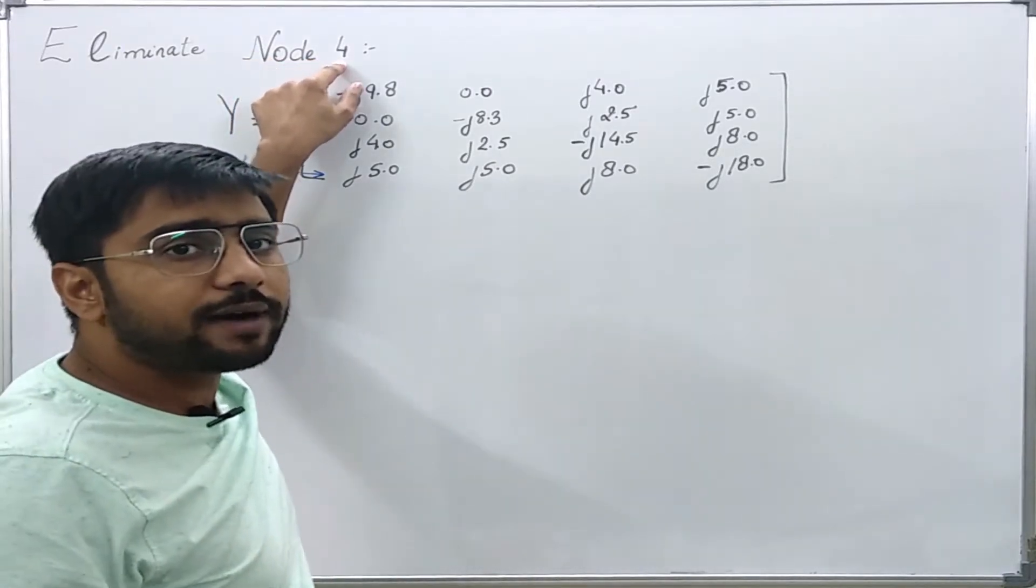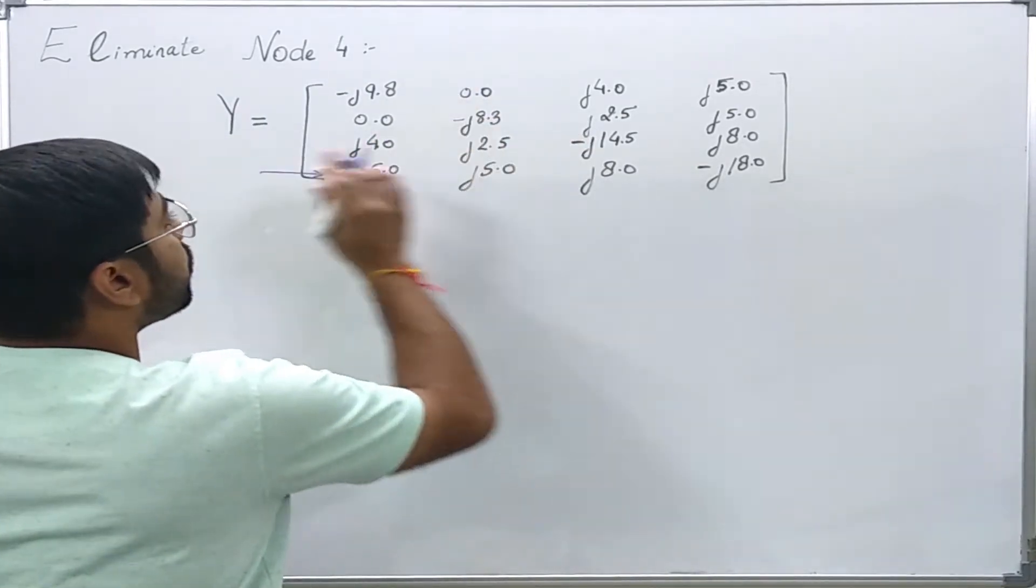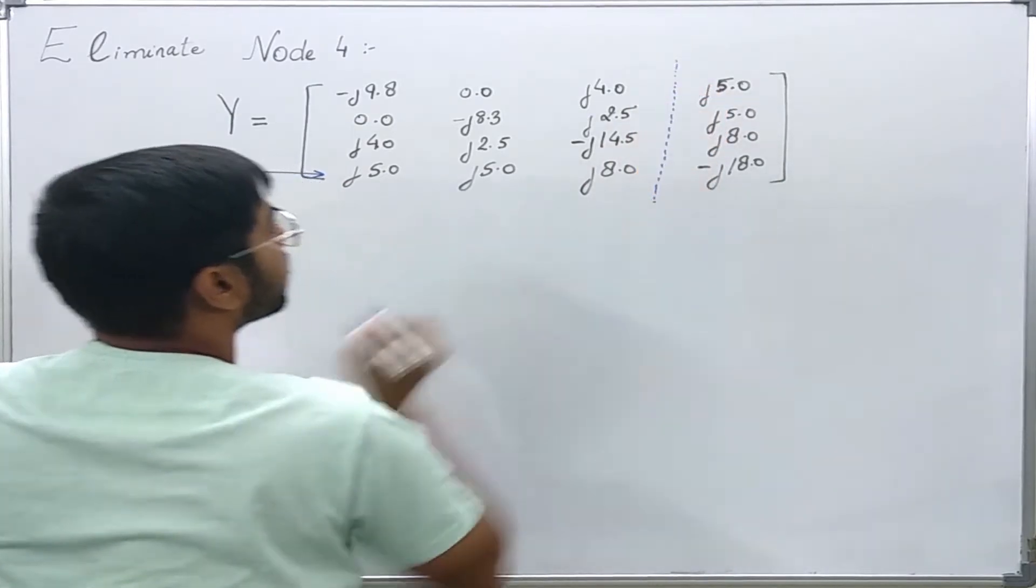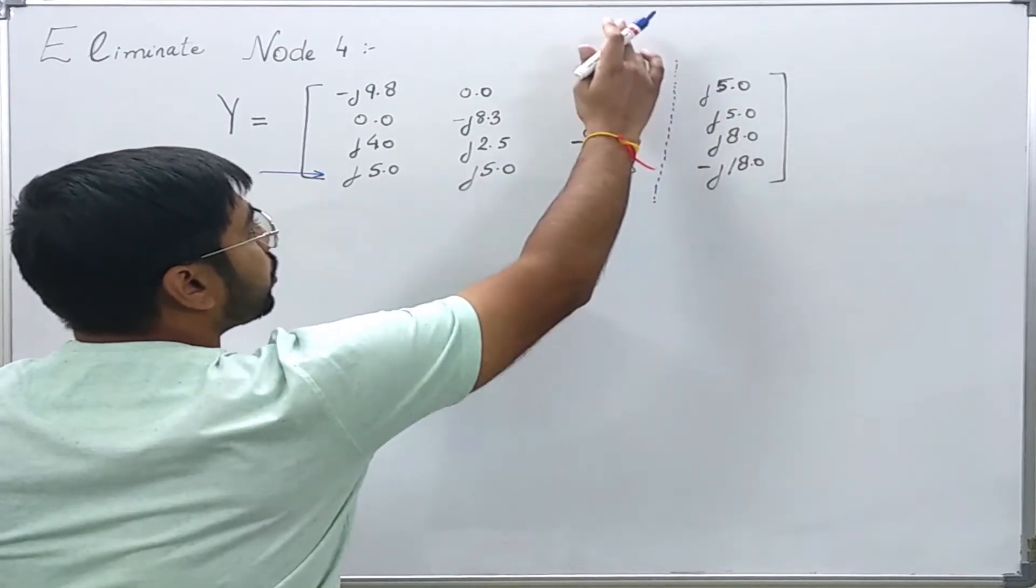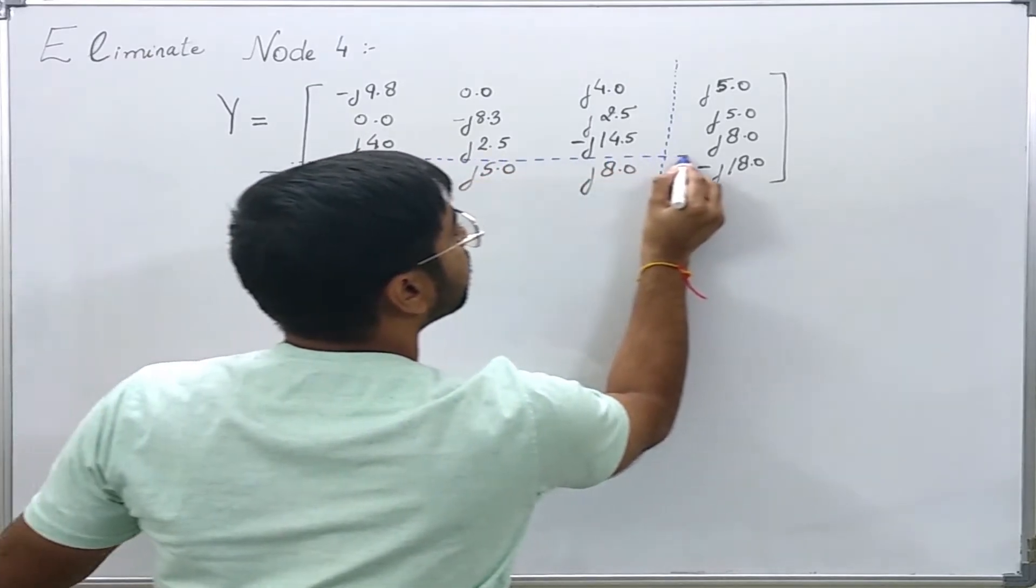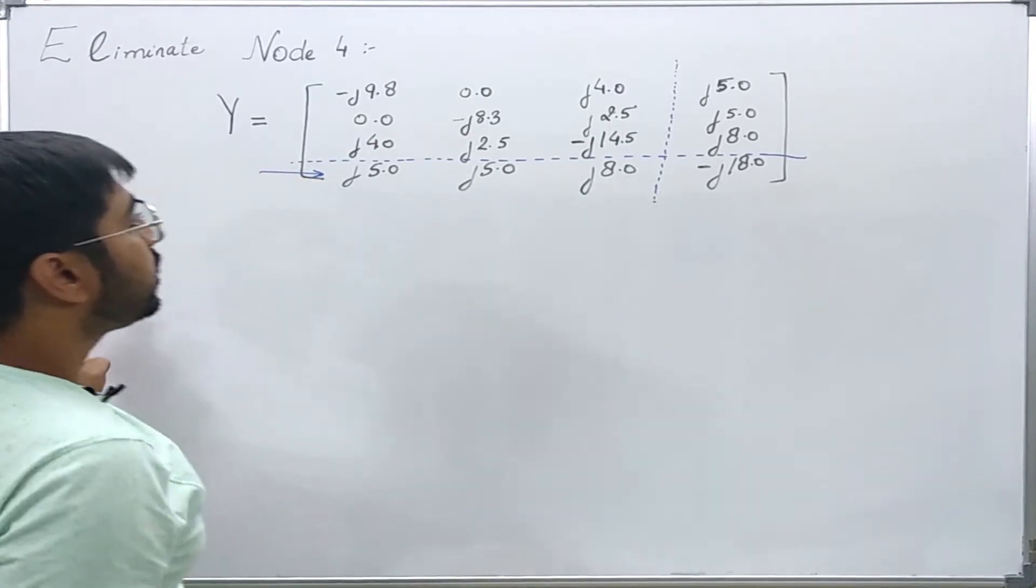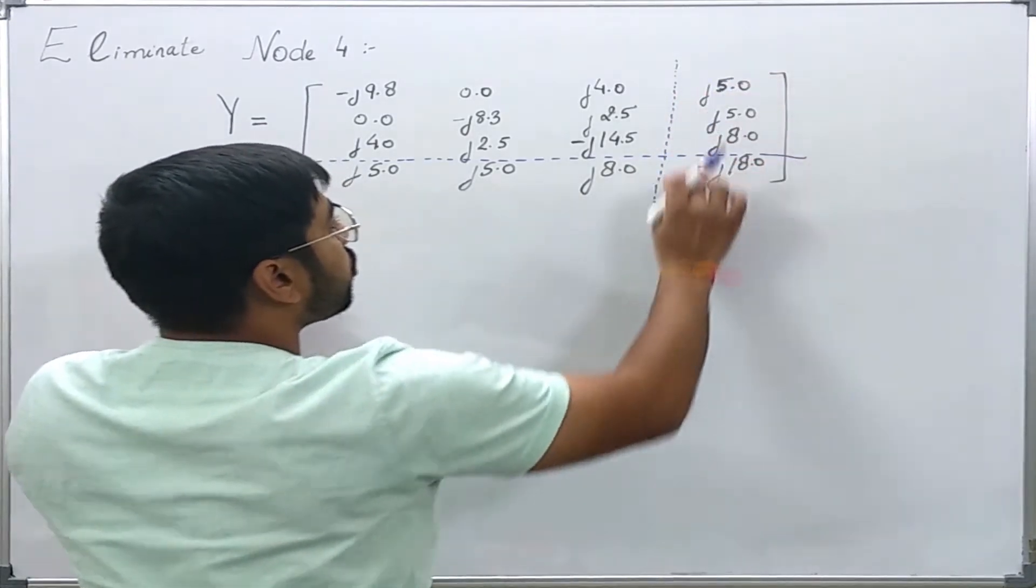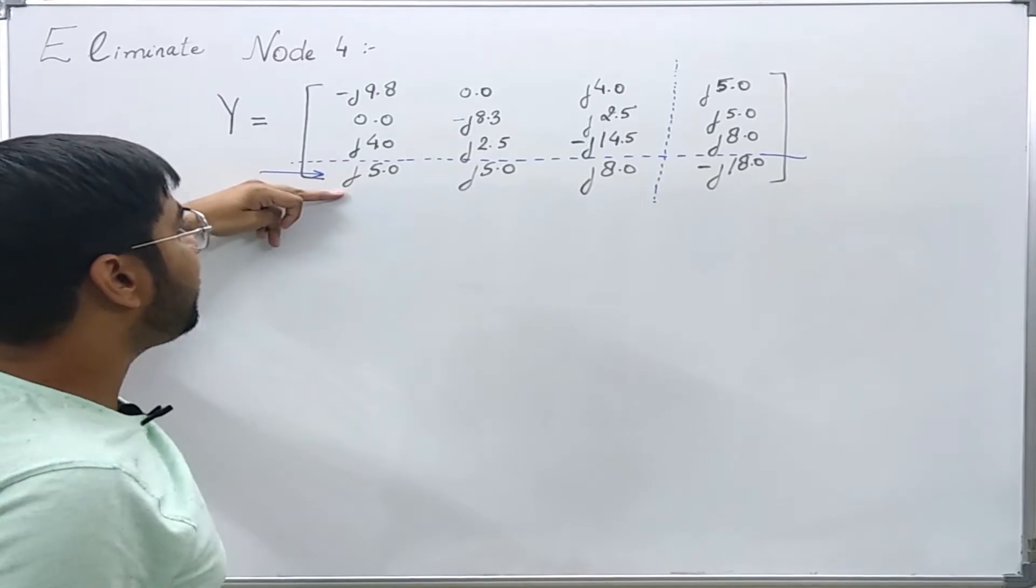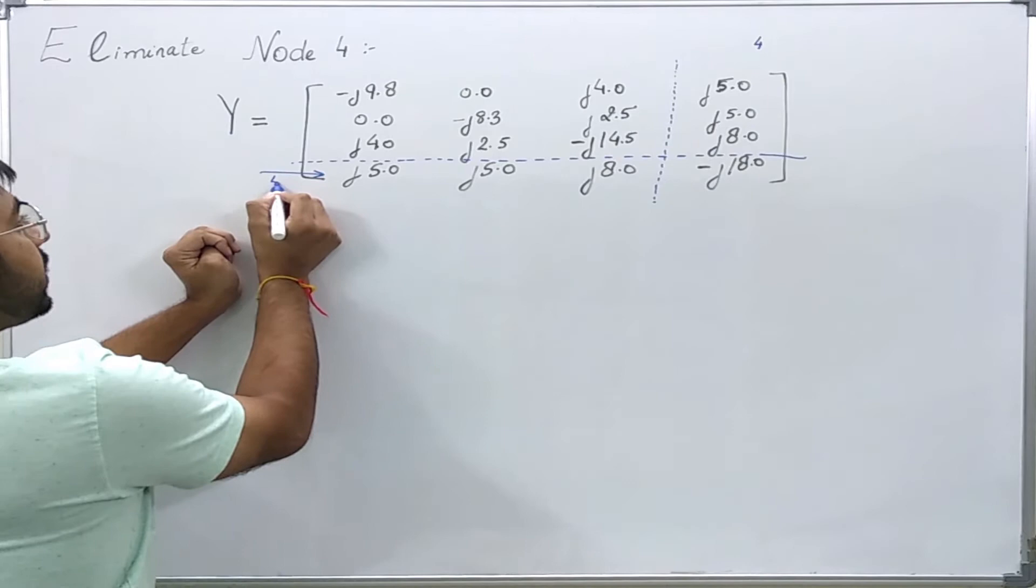So we do not require any renumbering of the nodes. Let us say I partition this matrix in this given way - a vertical line between column 3 and column 4, and a horizontal line between row 3 and row 4. If I somehow eliminate this row and this column then I will have a resultant 3 by 3 matrix and this node 4 will be eliminated because here it pertains to node 4 and this also pertains to node 4.